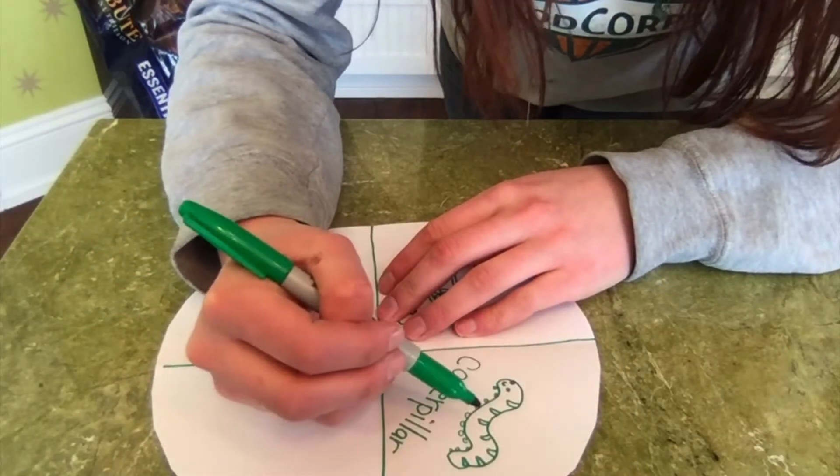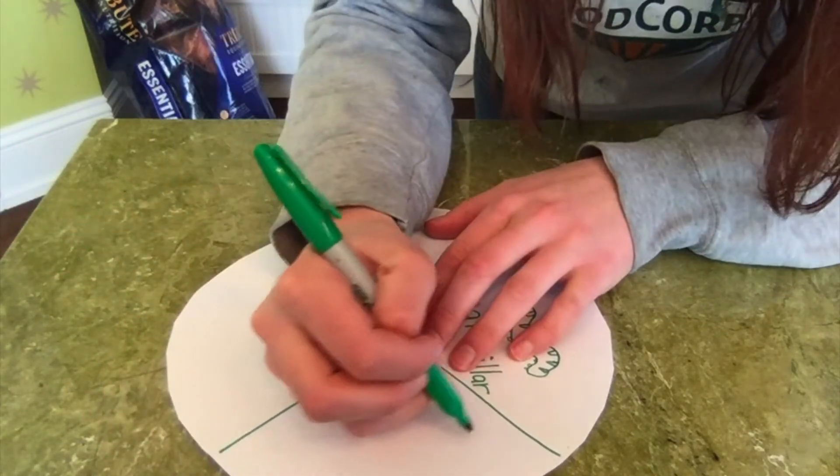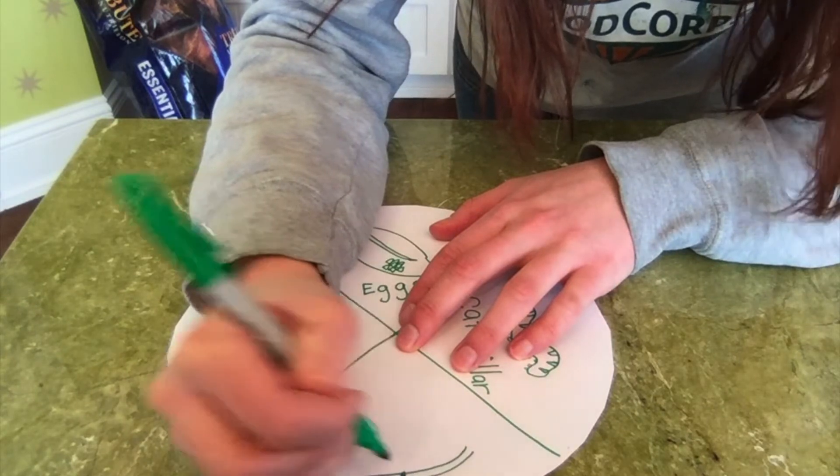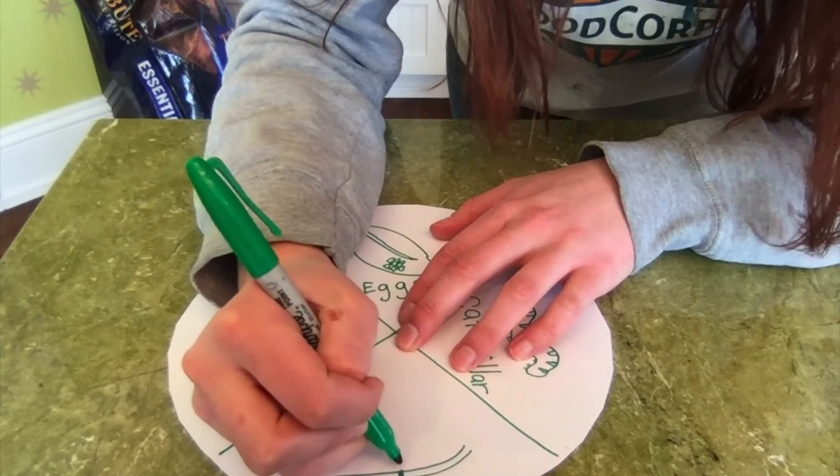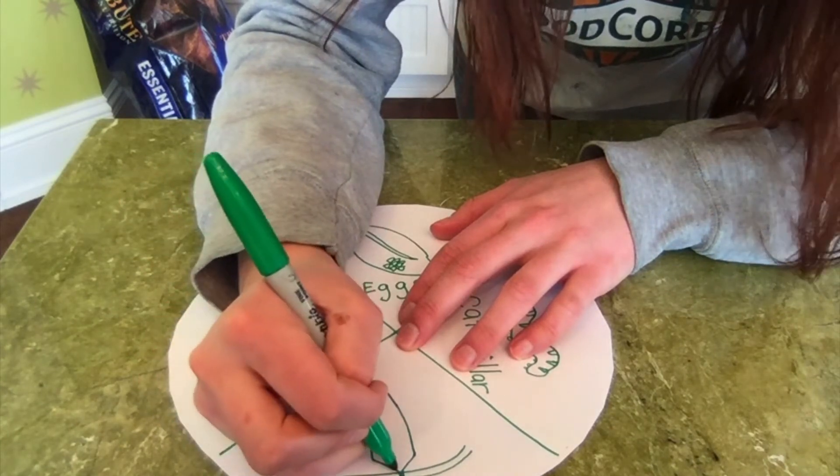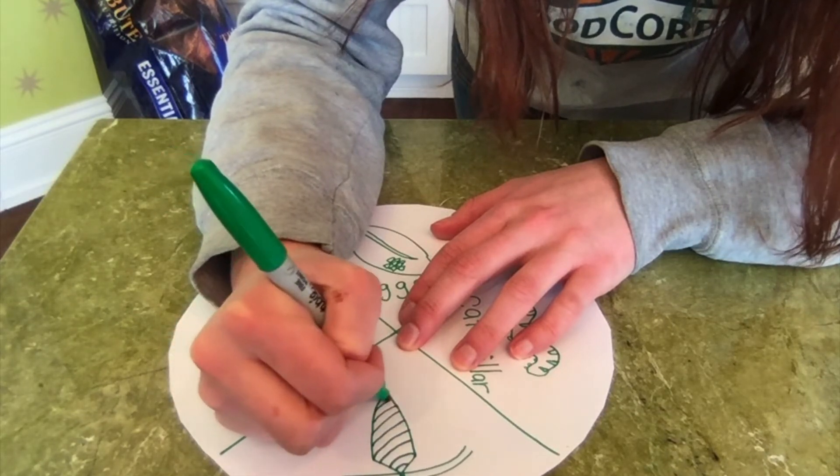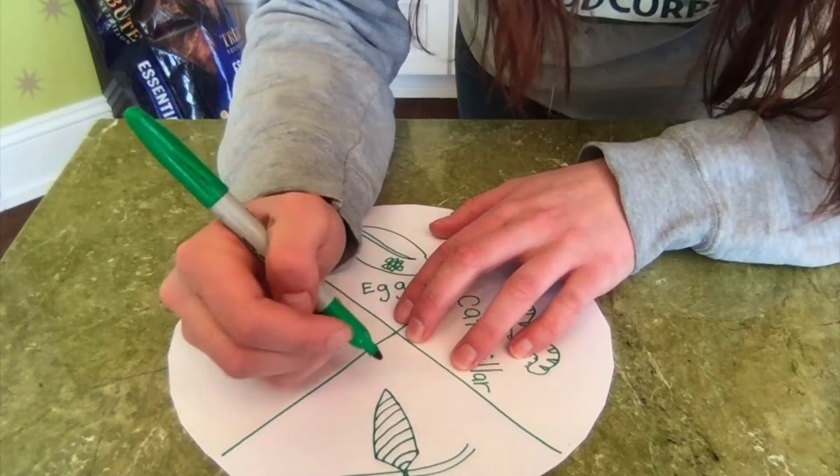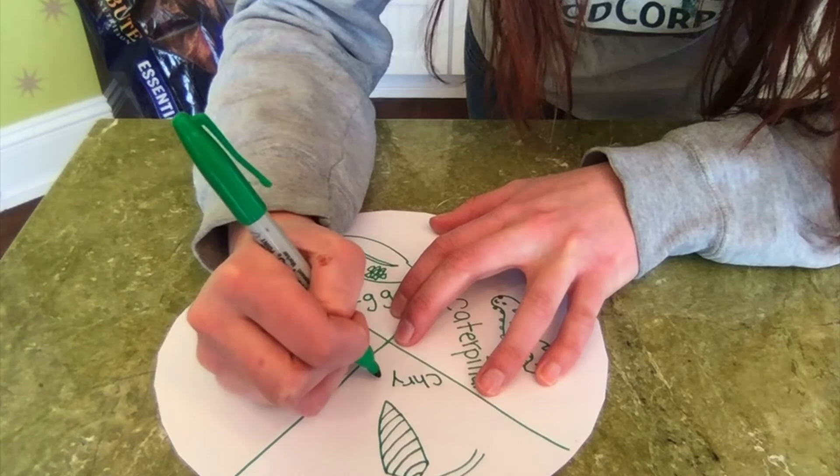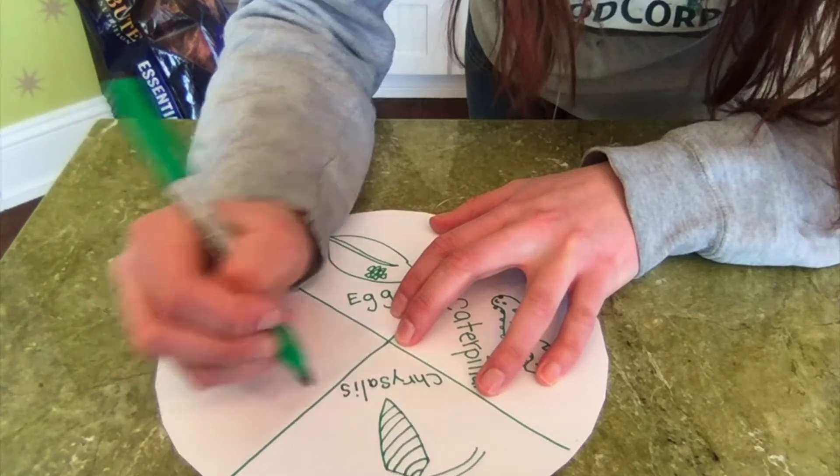So after the caterpillar has eaten all its food, it has to go through something called metamorphosis. And that just means it has to change. So to go through metamorphosis, it has to find a nice twig or branch and it has to make a chrysalis. Try saying that, chrysalis. So a chrysalis is just like this little cocoon. It's this little shell that the caterpillar wraps itself in to protect it while it's transforming into a butterfly. It's going under metamorphosis. It's changing into a butterfly. So chrysalis. It is spelled C-H-R-Y-S-A-L-I-S. Chrysalis.